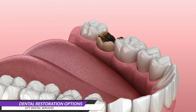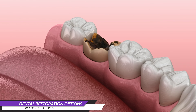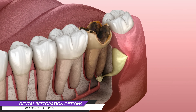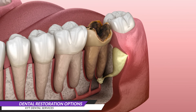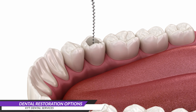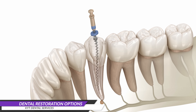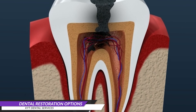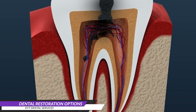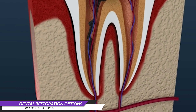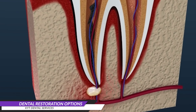When an individual develops a cavity, here are all the potential outcomes. In cases where the cavity reaches the nerve, a root canal procedure becomes necessary. This is because once the bacteria penetrate the root canal, there is no practical way to remove them.